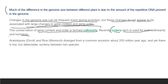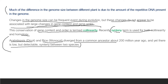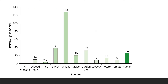Synteny is a term also used for colinearity and homology. An example is Arabidopsis, a dicot, and rice, a monocot, which diverged from a common ancestor about 200 million years ago, and yet there is low but detectable synteny between the two species — showing that dicots and monocots do have certain similarities.